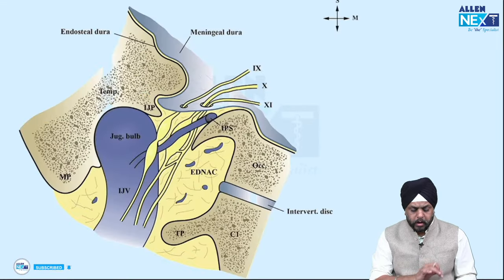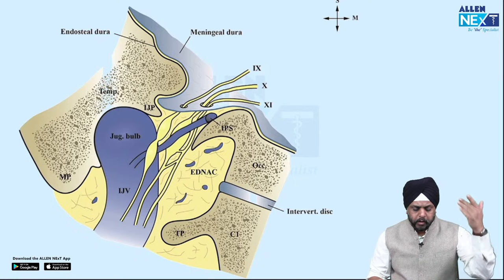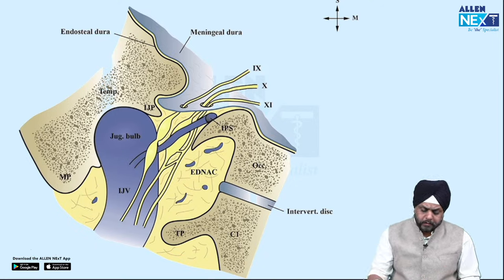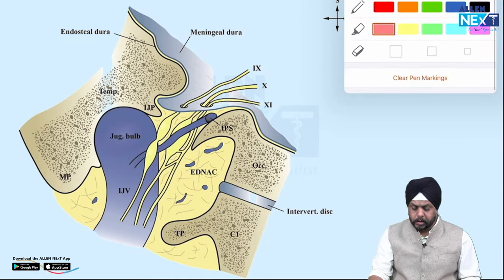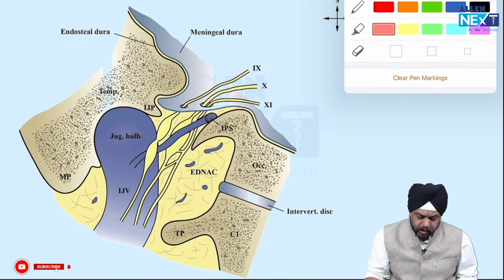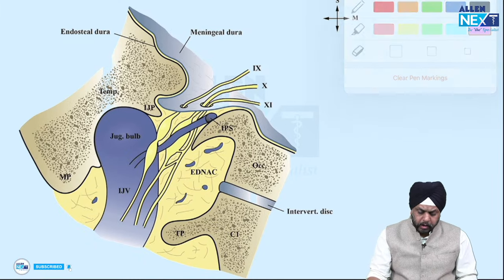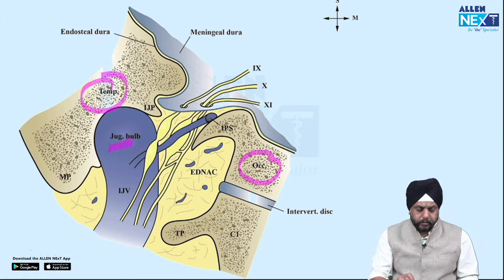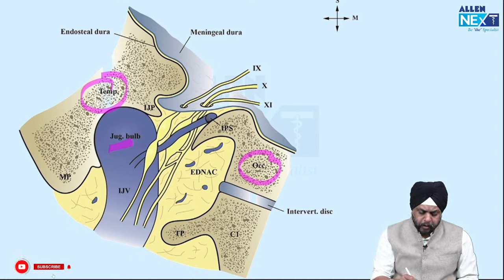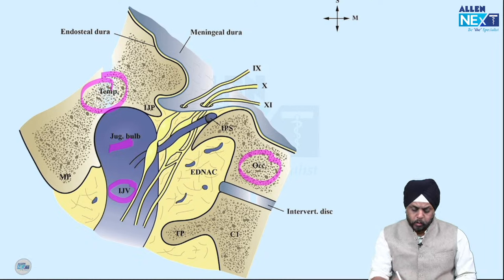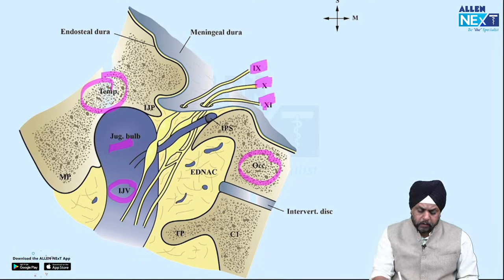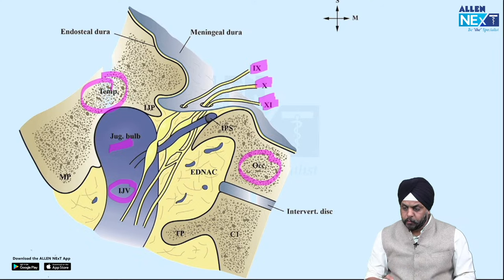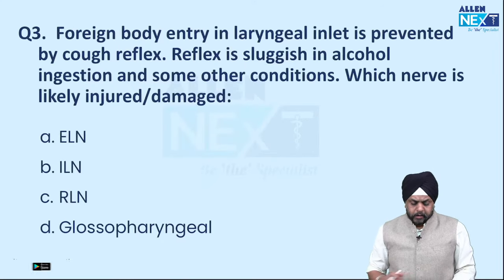This was the coronal section of the jugular foramen — a little difficult to understand. The jugular foramen is visible; the temporal bone and occipital bone are cut to show it. You can see the jugular bulb going down as the internal jugular vein, with the ninth, tenth, and eleventh nerves going along downwards.